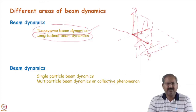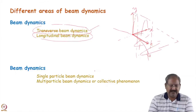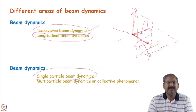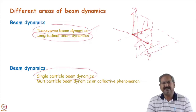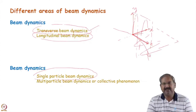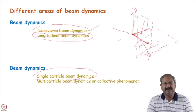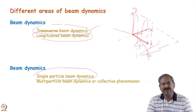Another classification of beam dynamics is single particle beam dynamics, which concerns trajectories of a single particle - how the coordinates in six dimensions evolve. The transverse coordinates are x, x-prime, y, y-prime, and the other two variables form the longitudinal coordinates. In single particle beam dynamics, the presence of one particle doesn't affect the motion of another particle.